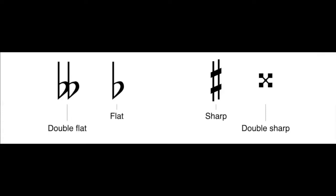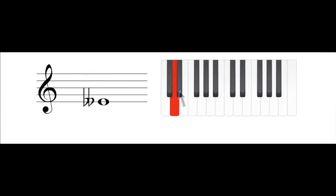The next accidentals that we will cover are double flats and double sharps, which alter notes by two half steps, or a whole step. An E natural moves down a half step to E flat, and a second half step to E double flat. A C natural moves up two half steps to C double sharp.